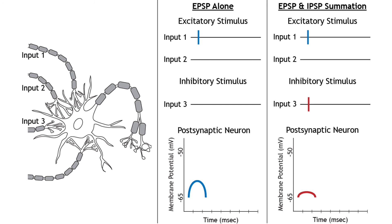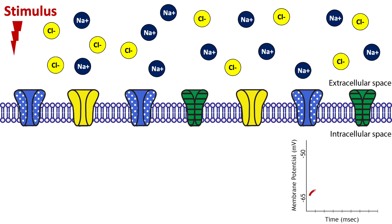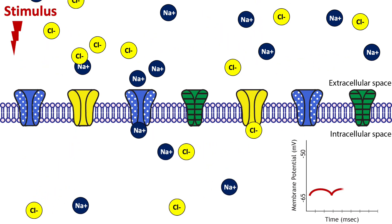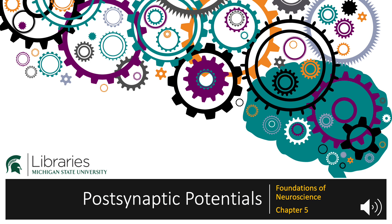In addition to the summation of excitatory inputs, EPSPs can also summate with inhibitory inputs. If an inhibitory input — input 3 in the figure — stimulates the postsynaptic neuron at the same time as an excitatory input — input 1 in the figure — the result is a decrease in the amount of depolarization, or the complete prevention of depolarization, depending on the strength of the inhibitory input. In the case of combined inhibitory and excitatory stimuli, both chloride and sodium channels will open. As sodium enters the cell, trying to move the membrane potential to positive 60 millivolts — the equilibrium potential of sodium — chloride will also enter, trying to keep the cell near negative 65 millivolts, the equilibrium potential of chloride.